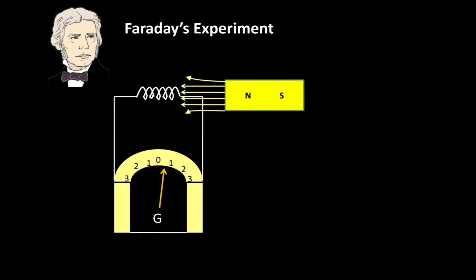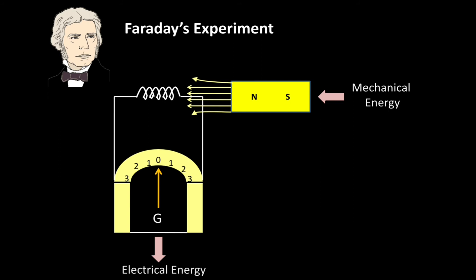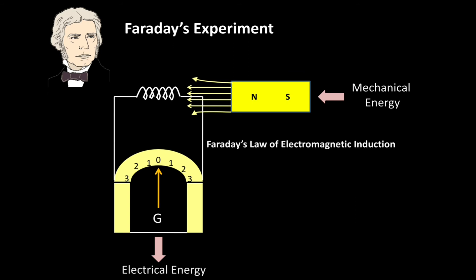From this, Faraday concluded that to move the magnet continuously, mechanical energy is required. After giving the mechanical energy and moving the magnet, the output is electrical energy. This means mechanical energy can be converted into electrical energy. Hence Faraday made a statement, which is called Faraday's Law of Electromagnetic Induction.